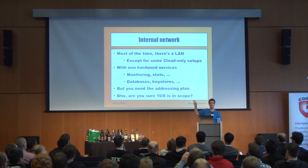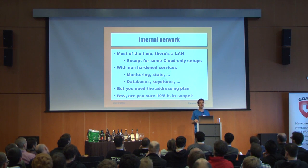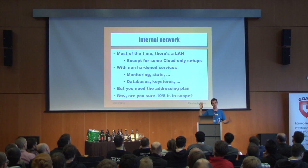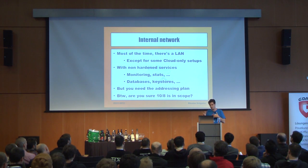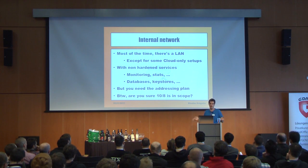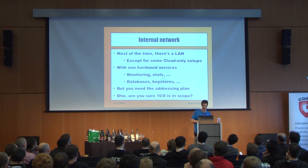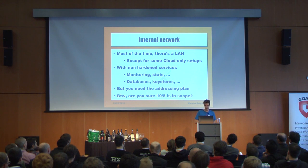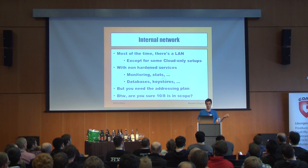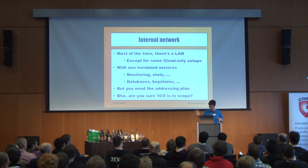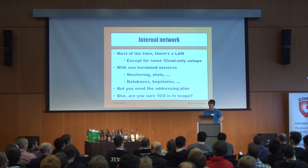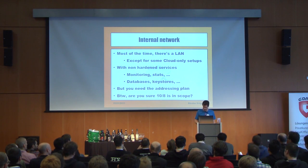Maybe the internal network is not in scope. That was the case with GitHub: GitHub has a mixed content proxy called Camo with a vulnerability. I explored it, was reaching the internal network and finding Tomcat servers, and sent an email to GitHub. The answer was: you're reaching an internal network, but it's not our internal network — the proxy is outsourced to Cloudflare. So in fact I was scanning Cloudflare's internal network. Keep that in mind: you may not be in scope.